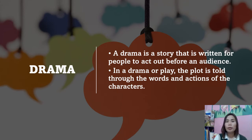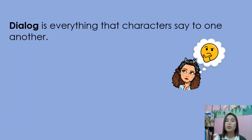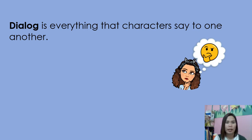We're going to discuss also the elements of drama. First, we have dialogue — it is everything that characters say to one another. When you say dialogue, these are the words written as speeches with the name of the character who is talking at the beginning of the line. It is an exchange of spoken words between two or more characters.